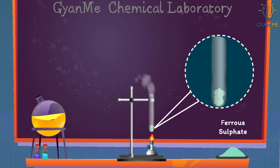Now heat the boiling tube over the flame of a burner. Observe the color of the crystals after heating. You must have noticed that the green color of the ferrous sulphate crystals has changed to orange.